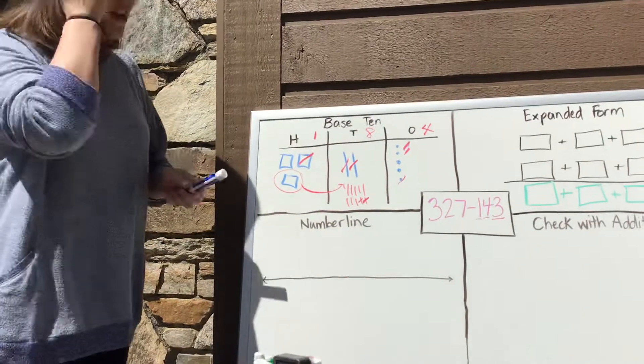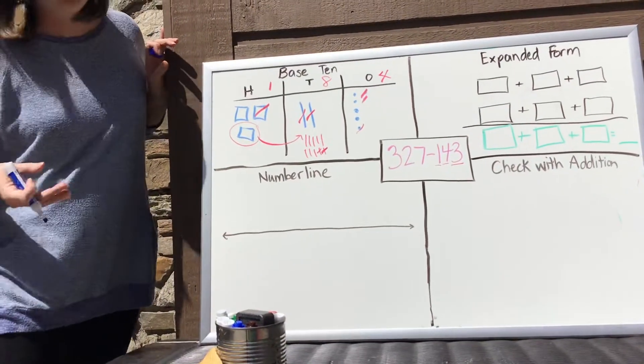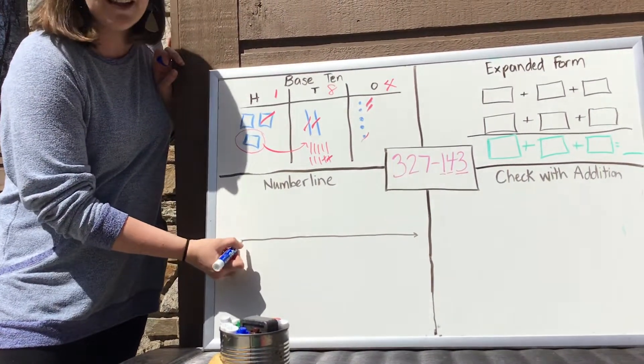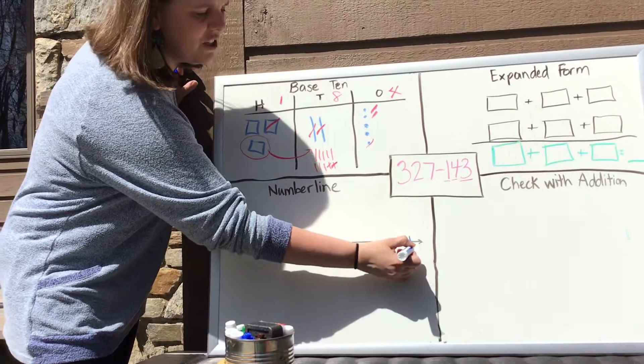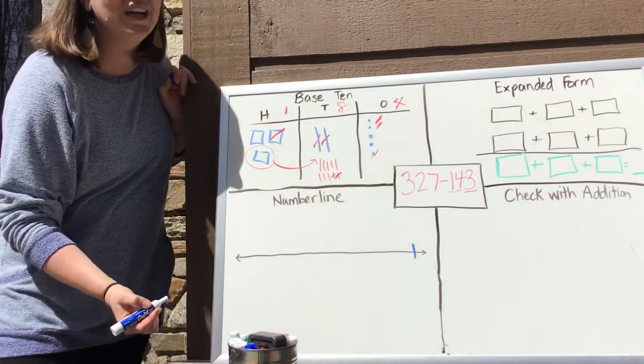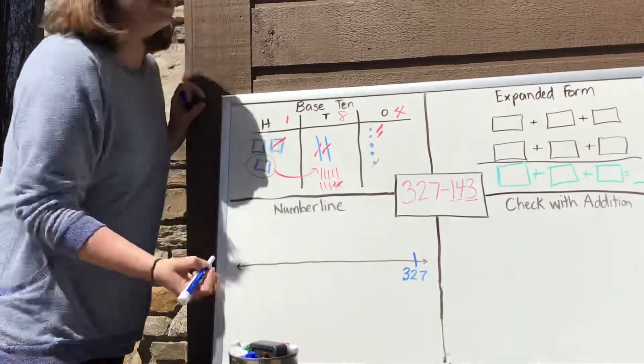We're going to talk about the number line now. On the number line, we're going to work backwards because we're taking it away. So when we were doing addition, we were starting on this side of the number line. But for subtraction, we're going to start on this side. And again, we're going to start with our whole, which is 327. So I'm going to start by writing 327 in.